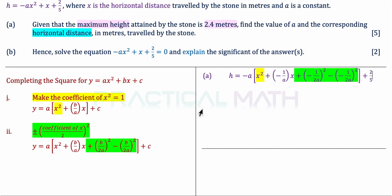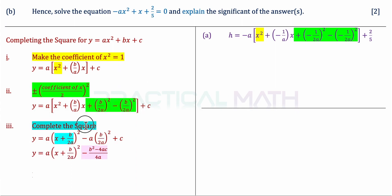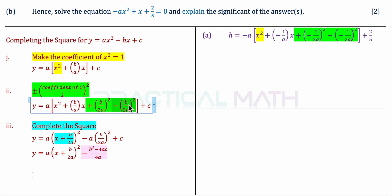Moving to Step 3, we combine the first three terms within the parenthesis. The expression x squared plus (b over a)x plus (b over 2a) squared can be rewritten as (x plus b over 2a) squared. The fourth term — minus (b over 2a) squared — is then expanded outside the bracket: a multiplied by negative (b over 2a) squared gives negative a times (b over 2a) squared, combined with the existing plus c term.